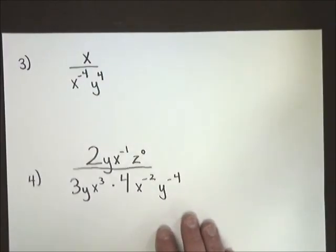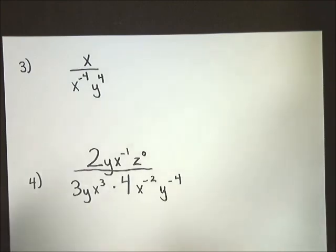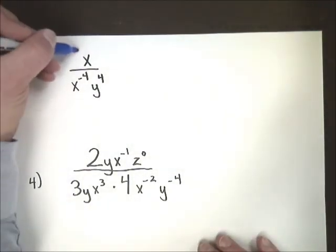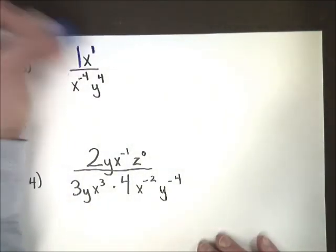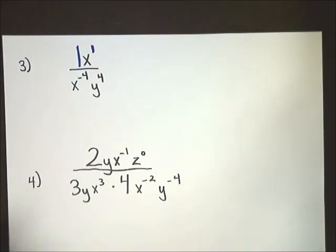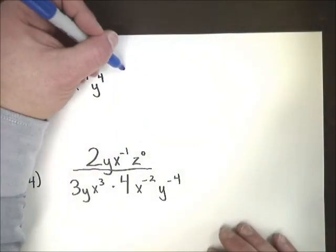Look at example number three. Number three looks really easy, it's really not that difficult. I'm going to add my ones and everything. I have no zero exponent terms so I'm not going to do anything with those. I am going to move...